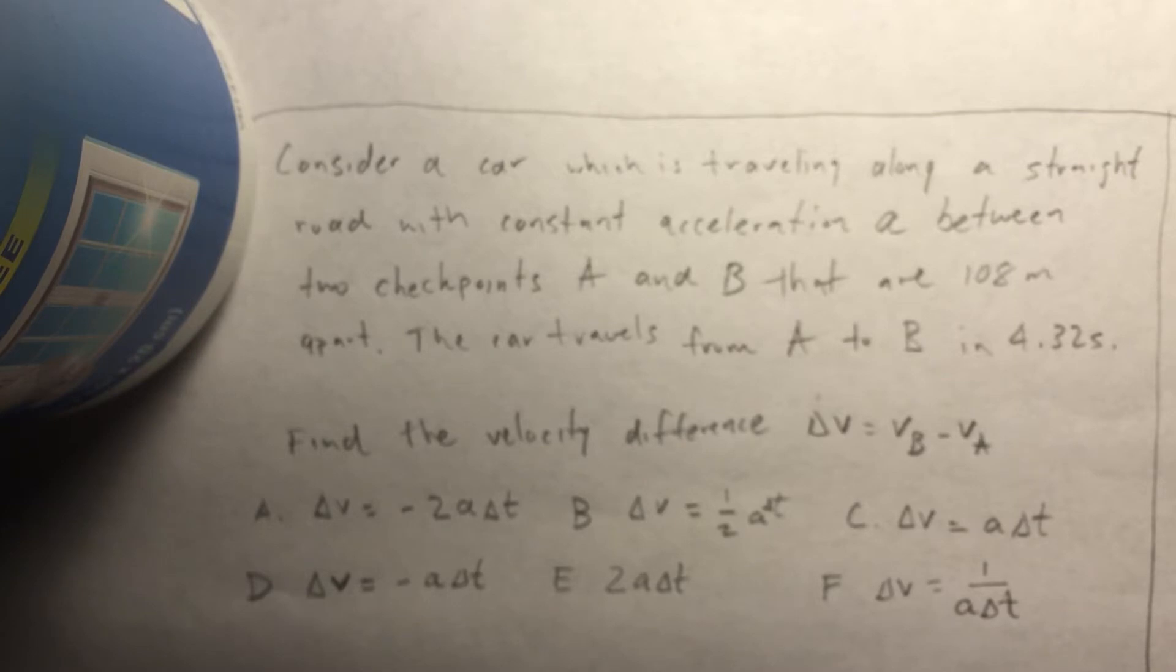Find the velocity difference, delta V equals V sub B minus V sub A, and then we have our answer choices A through F. Let's look at those later.